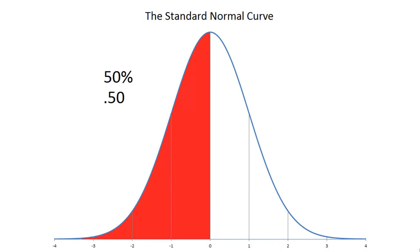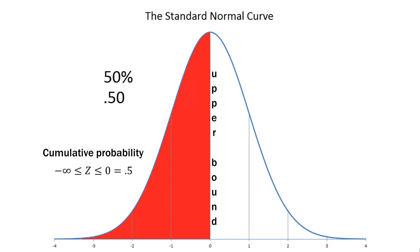If the area under the curve is one, then exactly half of the area is 0.5 or 50% of the distribution. We call this the upper bound of the cumulative distribution. This represents the area from negative infinity all the way up to a Z score of zero, which is our mean. We can write it as: negative infinity ≤ z ≤ 0 equals 0.5. That's just an interval in our normal curve.